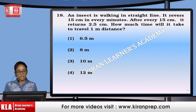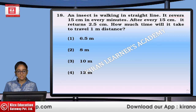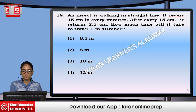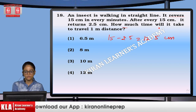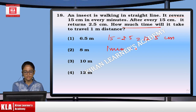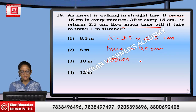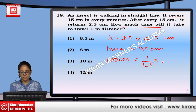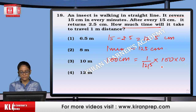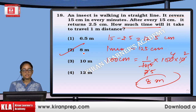An insect walks in a straight line covering 15 cm every minute, but after every 15 cm it reverses 2.5 cm. So the net distance covered per minute is 12.5 cm. To cover 100 cm, time = (1/12.5) × 100 = 8 minutes. Option number 2.